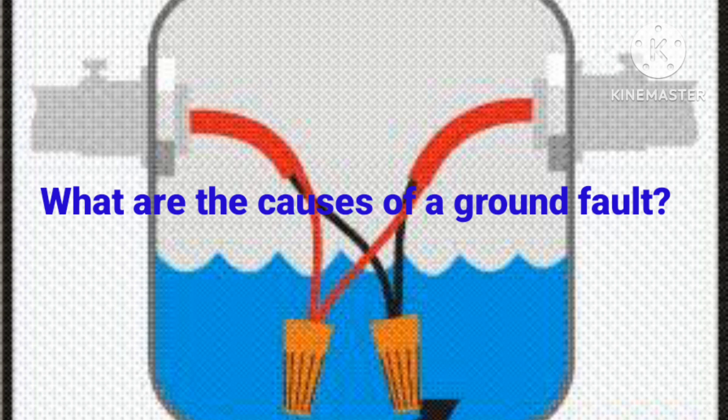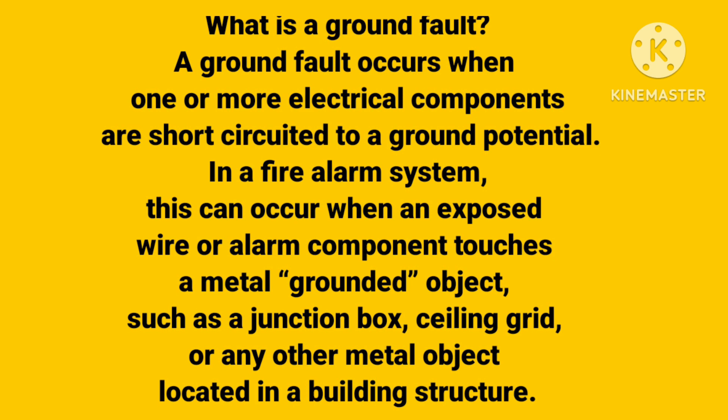Ground fault or earth fault - what are the causes of ground fault and what is ground fault? How will we troubleshoot the ground fault? Let's start. First, what is a ground fault? A ground fault occurs when one or more electrical components are short circuit to ground potential. In fire alarm systems, this can occur when an exposed or open wire or alarm component touches a metal grounded object such as a junction box, ceiling grid, or any metal object located in a building structure.